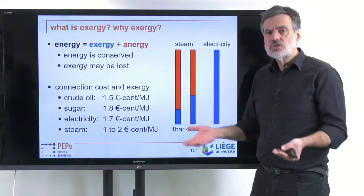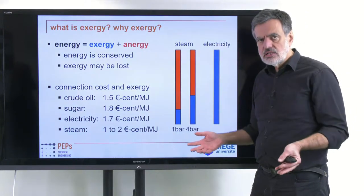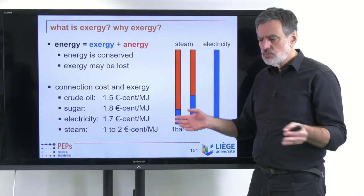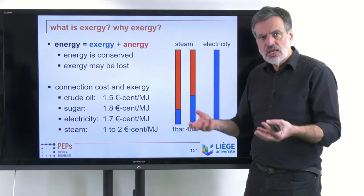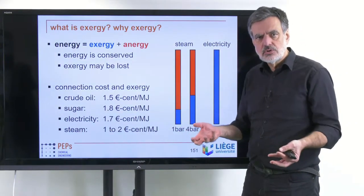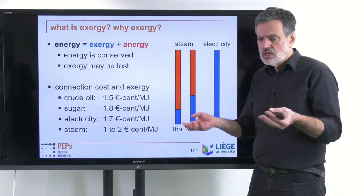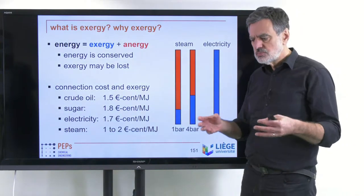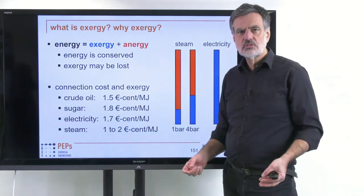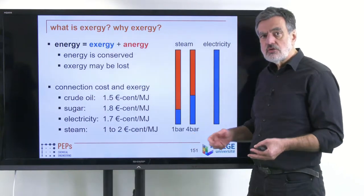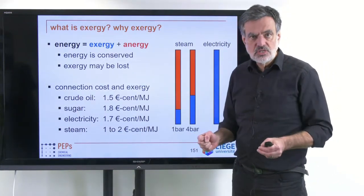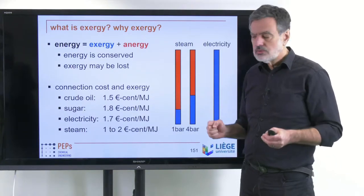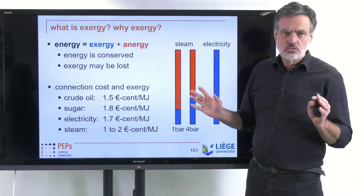That energy may be contained somewhere yet cannot be used for anything becomes obvious if you look at a tank with, say, a cubic meter of water at ambient temperature. It contains energy at that temperature, but you can't do anything with it — there's no process that will allow you to drive a motor just because you have water at ambient temperature. If the water were at a thousand degrees centigrade, you could do something — drive a steam turbine, for example.